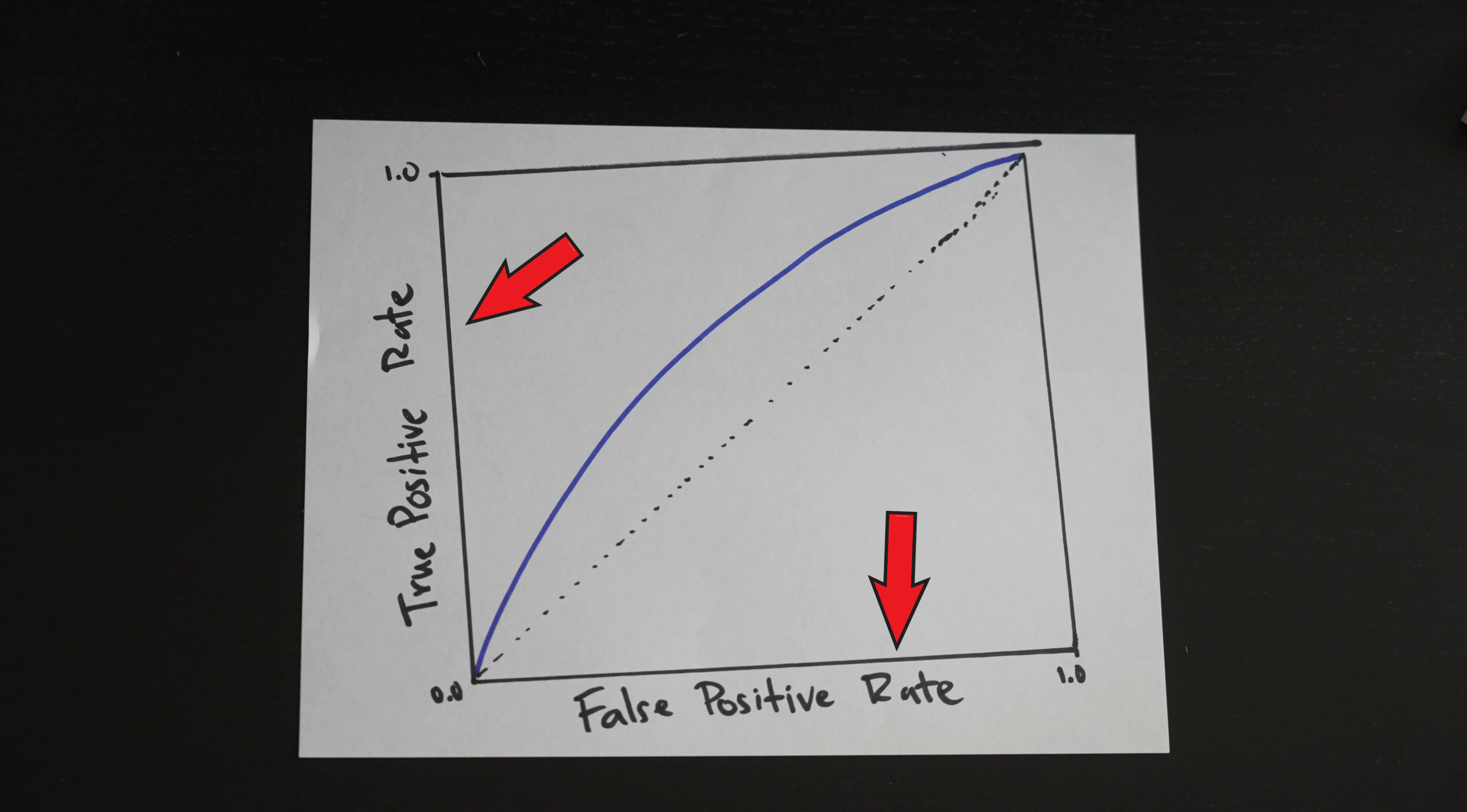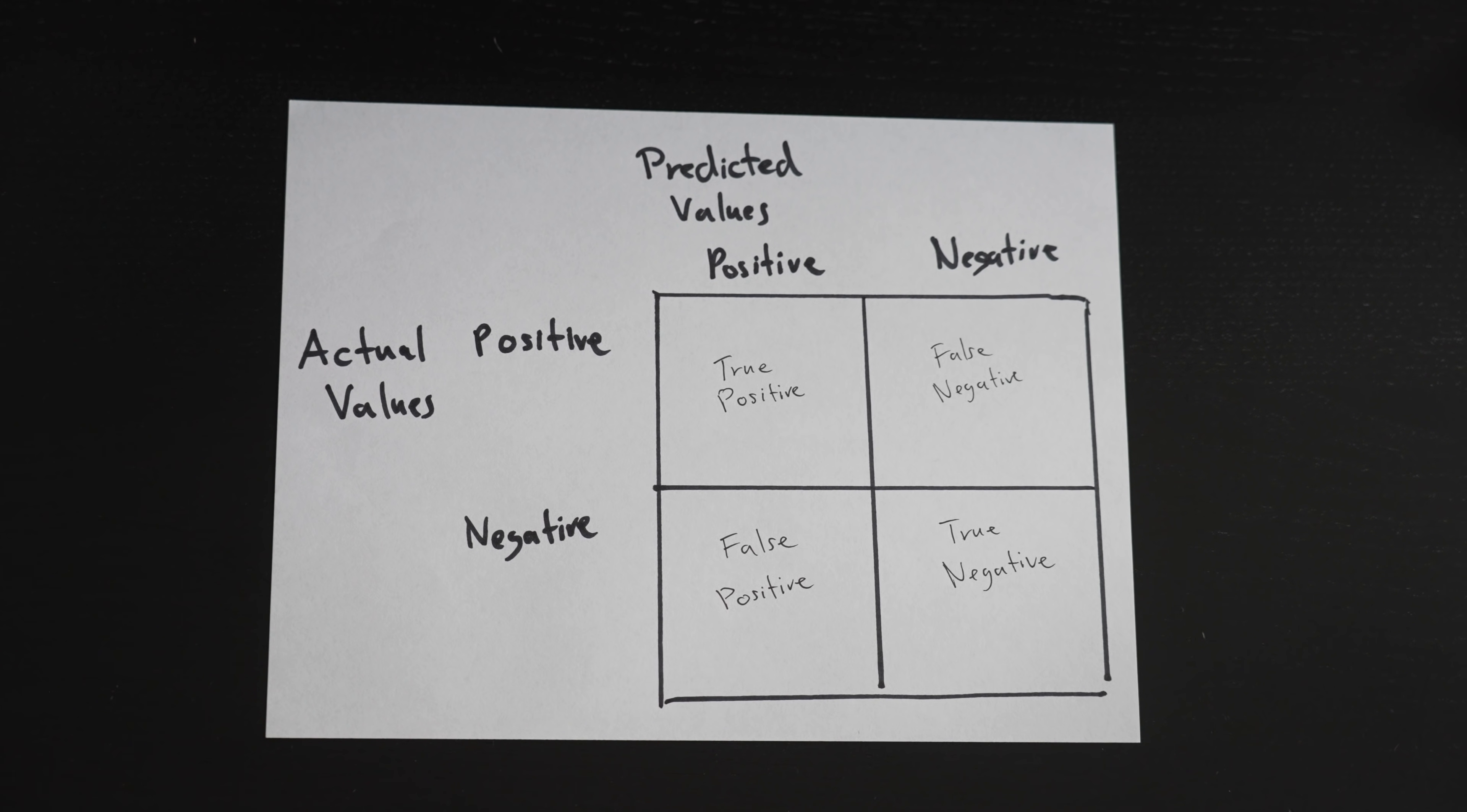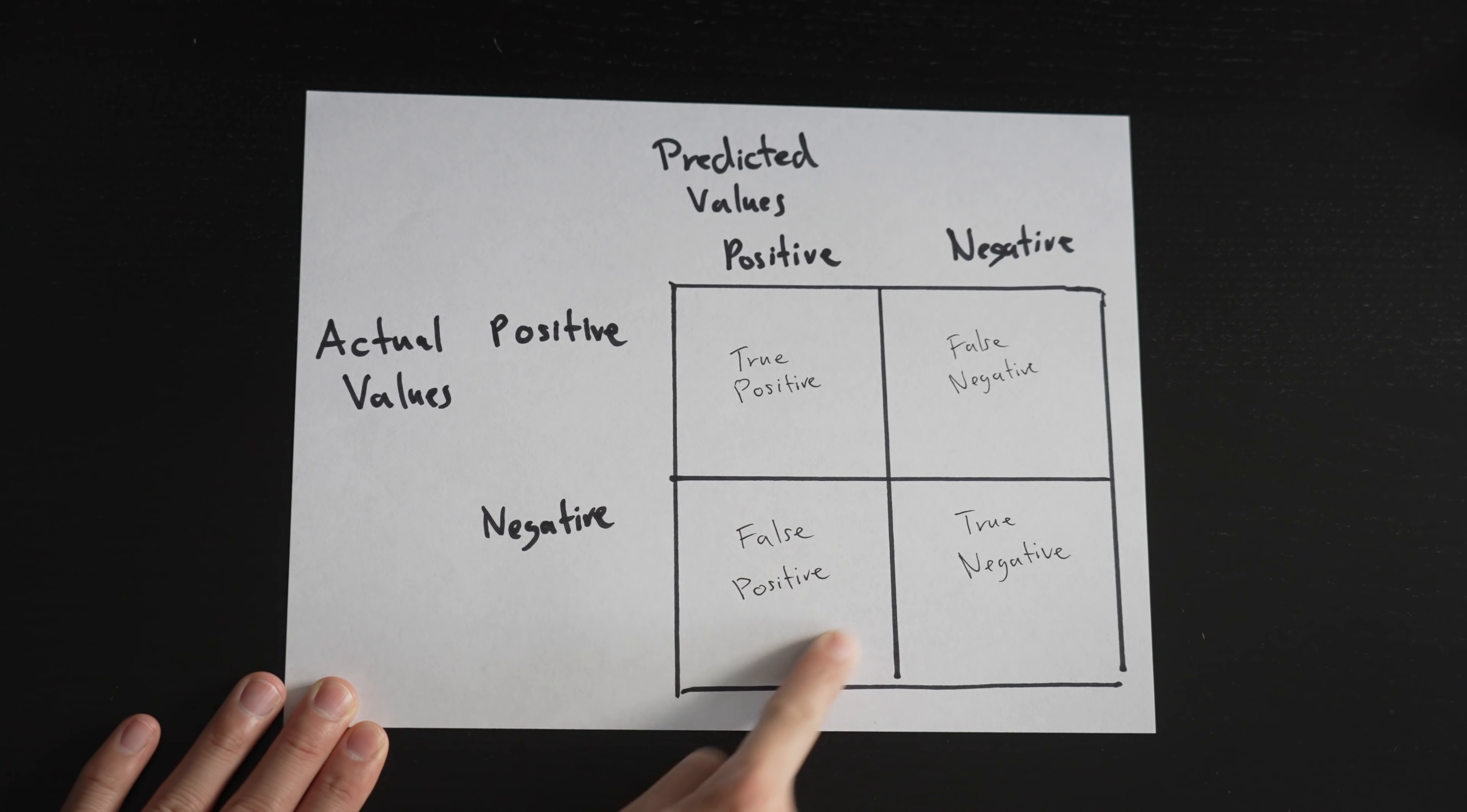And before we understand these rates, we have to understand what false positive means. When you're trying to predict a yes or no answer, there are four situations that can occur, which is represented by each of these squares. We first saw the term false positive, which is this one.